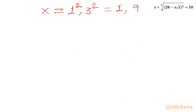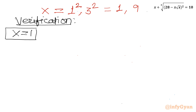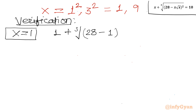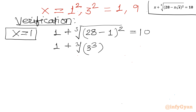Let us verify both solutions. For x = 1: 1 plus cube root of (28 minus 1·√1)² = 1 + ∛(27²) = 1 + ∛(3³·3) — simplifying, 28 − 1 = 27 = 3³, so cube root of (3³)² = cube root of 3⁶ ... actually cube root of 27² means ∛(3⁶) = 3² = 9. So 1 + 9 = 10. Verified!